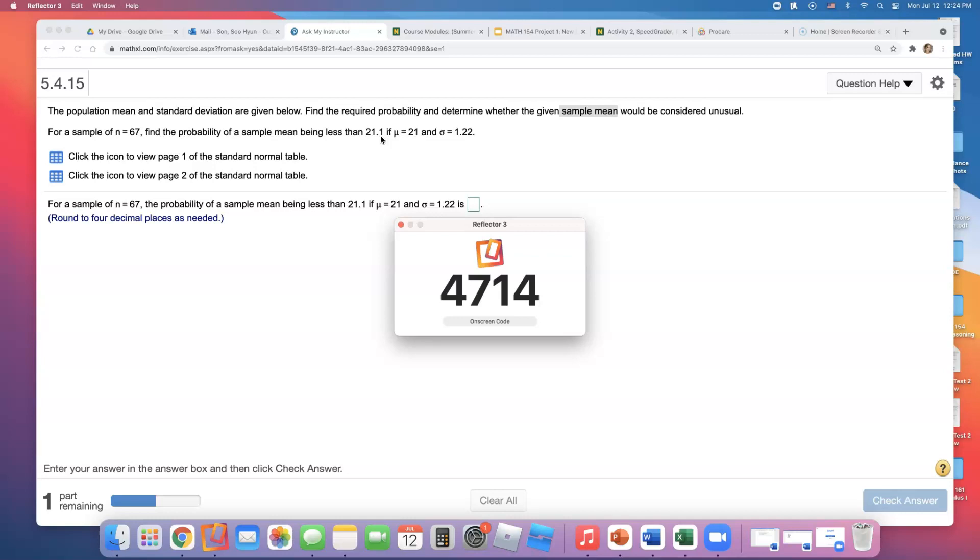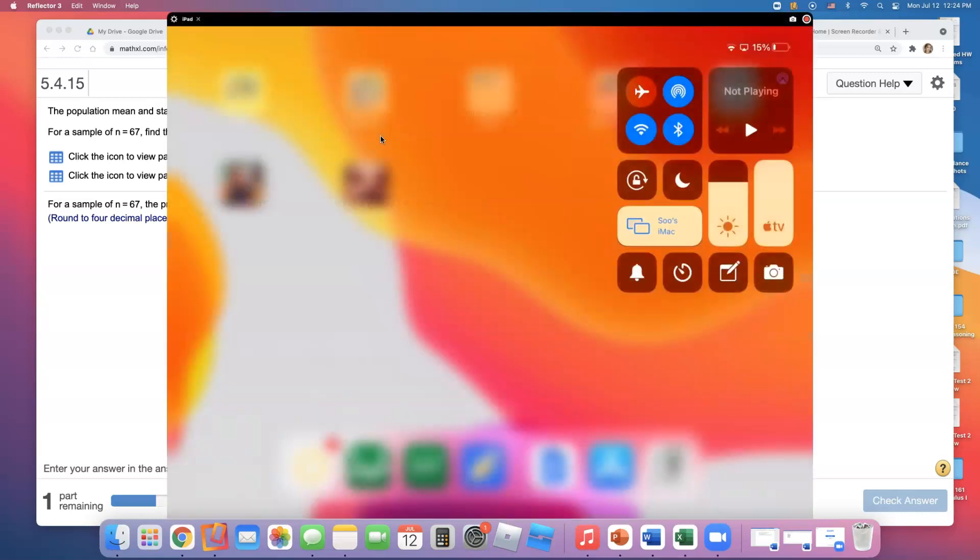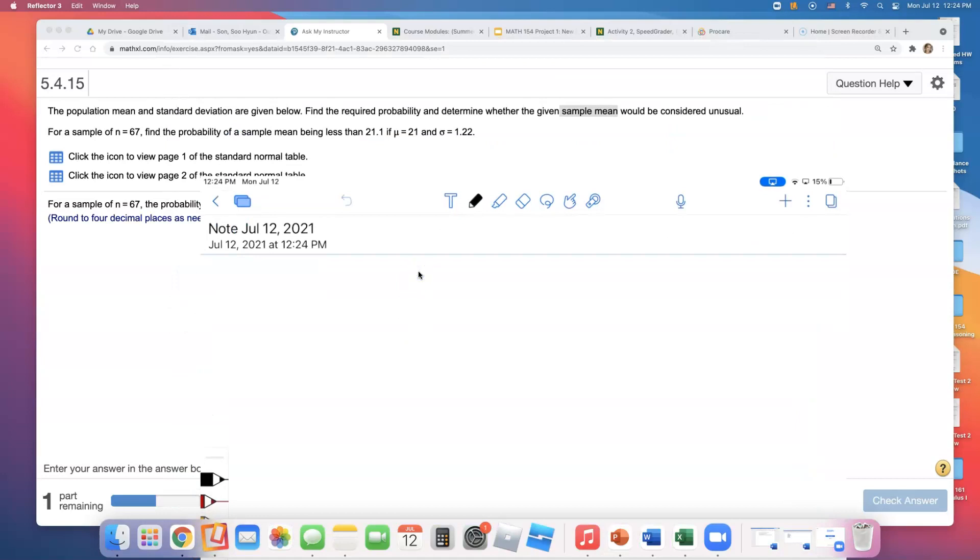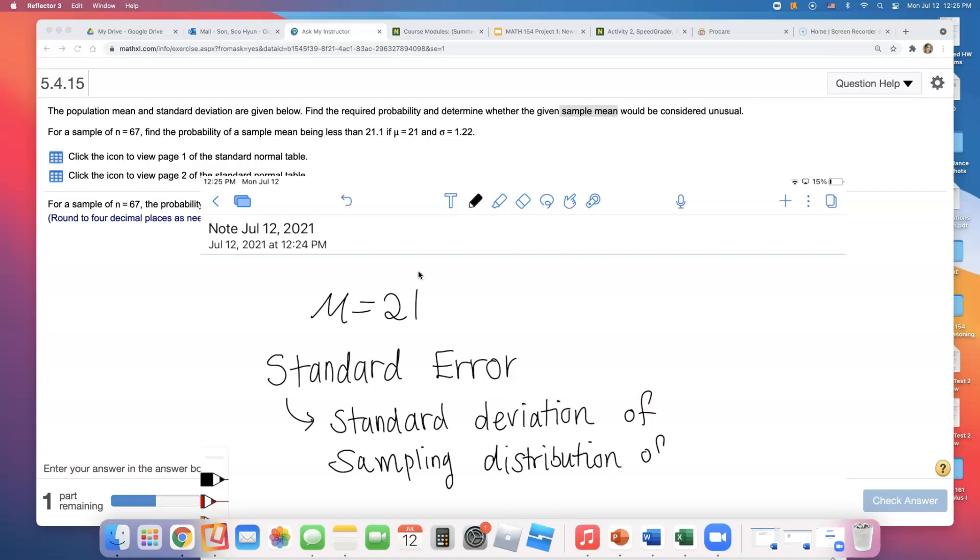The mean is the same - they said mean is 21 - but the standard deviation, I should say standard error, is different. This is the standard deviation of the sampling distribution of sample means.